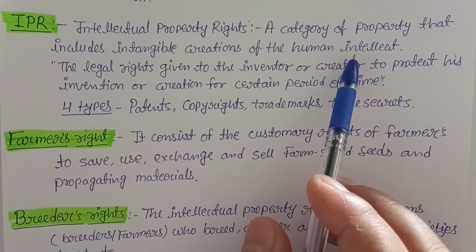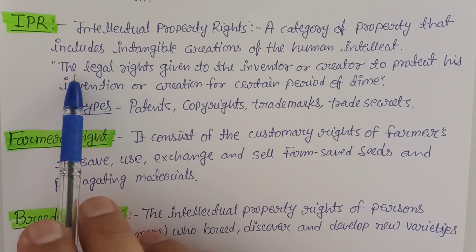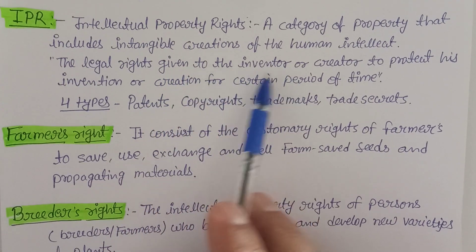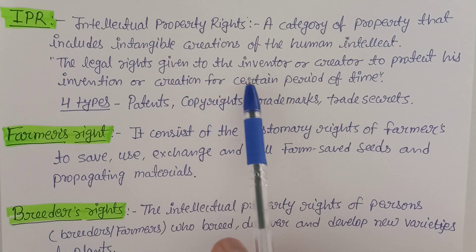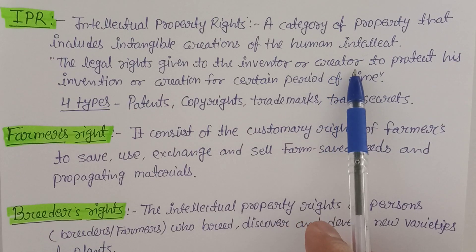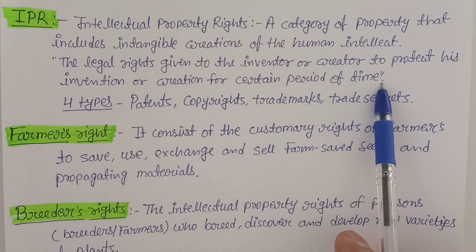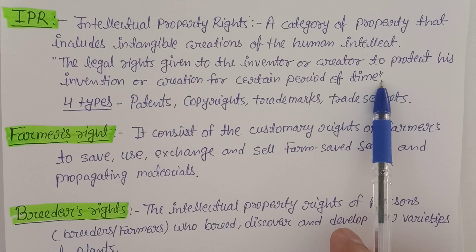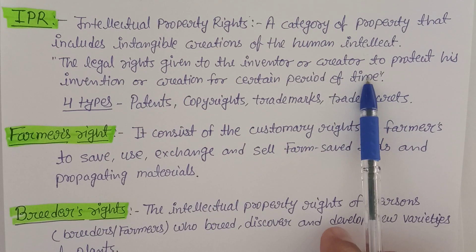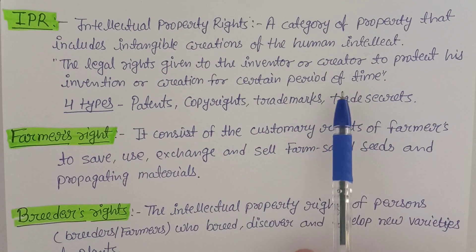For example, if somebody discovered any drug molecule — like penicillin, discovered by Alexander Fleming — they can have protection for that. That is what encourages the protection of intellectual property, which is why these rights have been made.